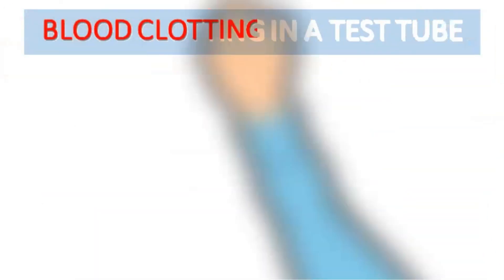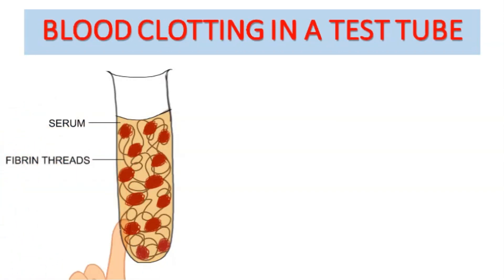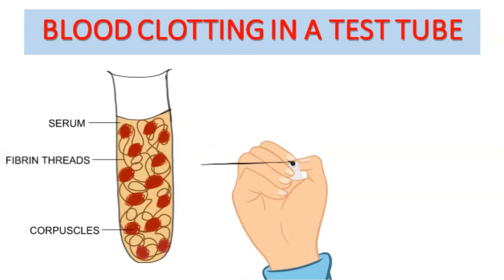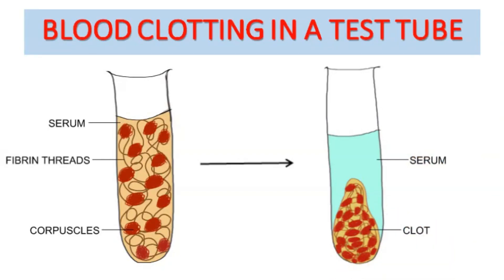The blood clotting process can be shown in a test tube. If some blood is taken in a test tube, a clot will form in the same manner and the serum will be squeezed out from the clot and collect on the surface. As shown in the figure, the left test tube contains coagulated blood — a fresh clot consisting of fibrin strands, corpuscles and serum. After some time, the clot is seen to have separated from the serum. If the number of platelets falls to an abnormally low count, coagulation occurs very slowly and often leads to hemorrhage, as occurs in certain diseases such as viral dengue fever.